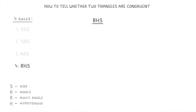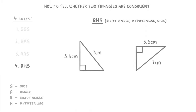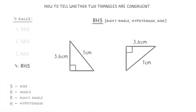The very last rule is the RHS rule, which stands for right angle, hypotenuse, and side. So this rule is specifically for right-angled triangles, and all you need to show is that the hypotenuses and one other side are the same length in both triangles. Looking at these two, these are both right-angled triangles, because of the little squares in the corner. They both have hypotenuses of 7cm, and one other side in each is 3.6cm. So these two must be congruent.